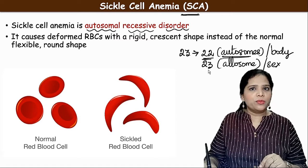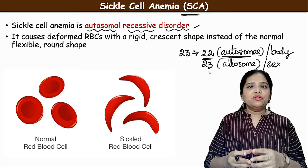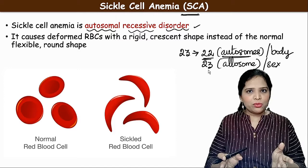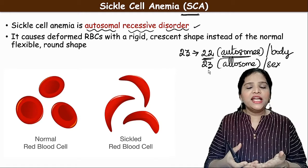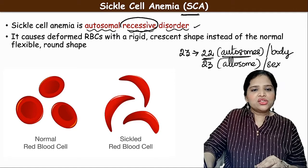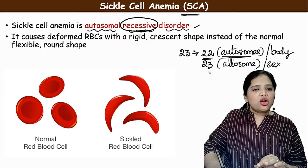Recessive disorder means if both defective genes are present on the chromosome pair, only then will the disorder be expressed. If only one is defective and another is normal, the disease will not be expressed. In sickle cell anemia, the RBC has a rigid crescent shape. In a healthy human being, the RBC is biconcave disc-shaped, whereas in a sickle cell anemia patient the RBC is crescent or half-moon shaped.